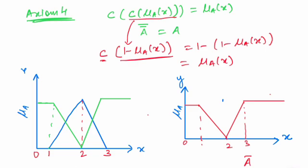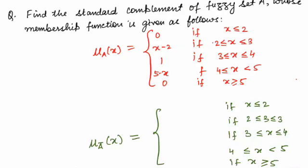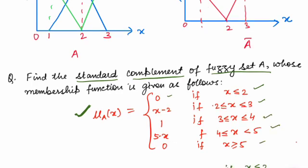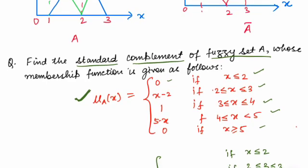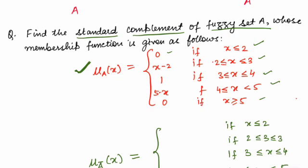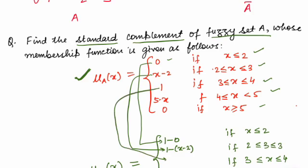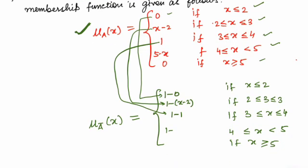Now let us move to a particular example. We have a fuzzy set A whose membership function takes value 0 for x ≤ 2, then x minus 2 for the next interval, then 1, then 5 minus x, and 0 beyond that. To find the standard complement, we apply 1 minus each piece: 1 minus 0 = 1, 1 minus (x minus 2), 1 minus 1, 1 minus (5 minus x), and 1 minus 0 = 1.